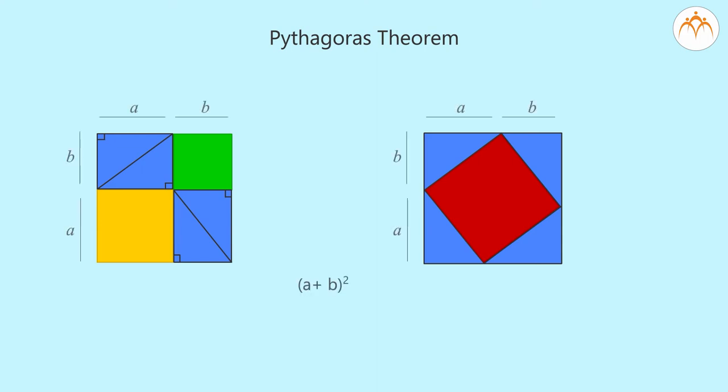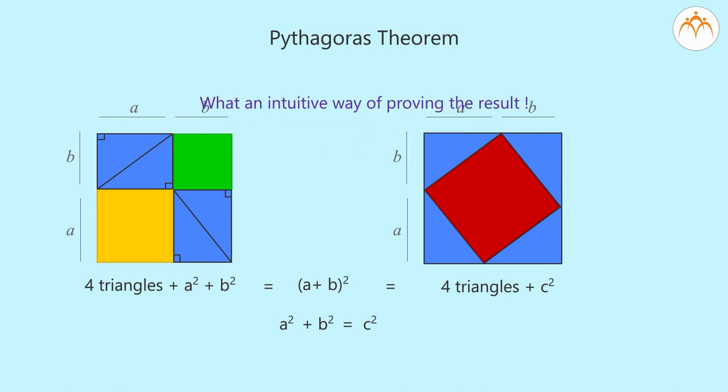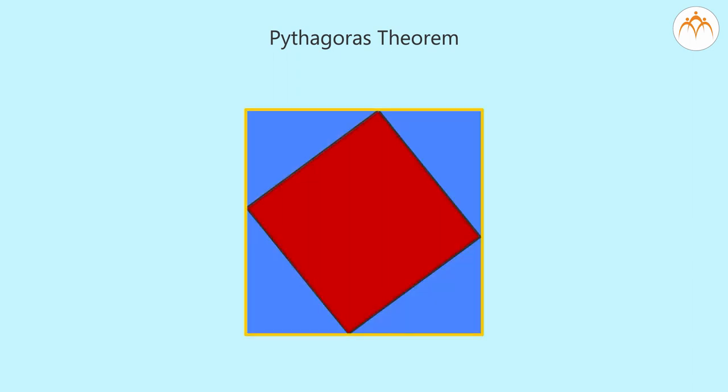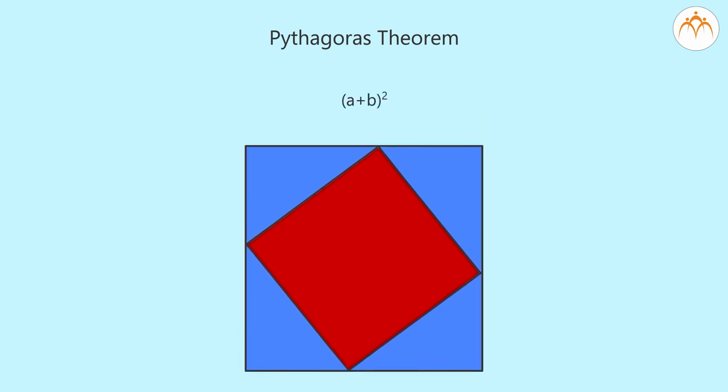Proof. A plus B bracket square is equal to four triangles plus A square plus B square which is equal to four triangles plus C square. This gives you the relation A square plus B square equal to C square. What an intuitive way of proving the result. Look at the figure 3 only and observe how the triangles and the square form a bigger square. If we know the expression for A plus B bracket square, one gets another proof of the theorem. What an interesting theorem it is.